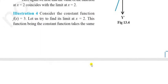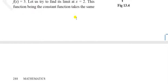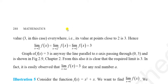For a constant function f(x) = 3 at x = 2: the left-hand limit and right-hand limit are always equal to the constant value 3. So the limit always exists for a constant function, and the limit value is 3.